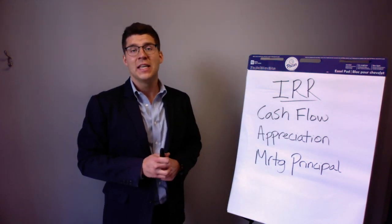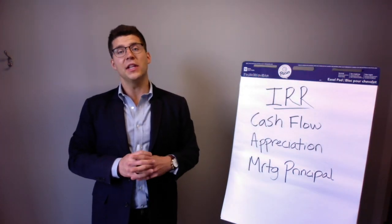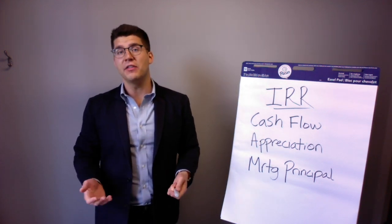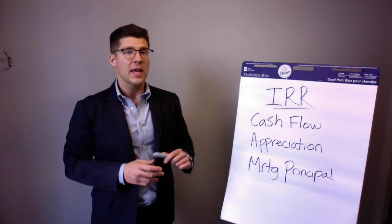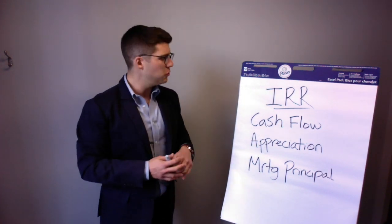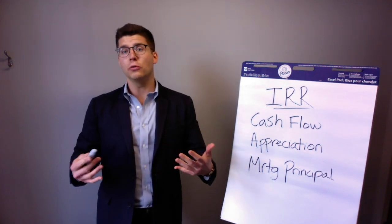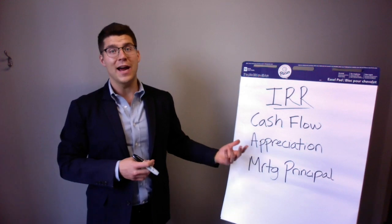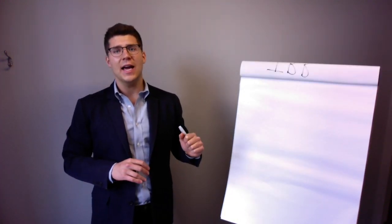So let's do a quick example. For easy numbers, let's say you bought a one million dollar property five years ago at a seven cap and you put down 50% on the mortgage. Big picture, what we want to do is add up all these numbers, find out our total return, and then we can average it out per year to find our IRR.